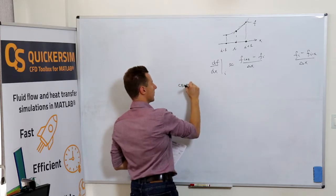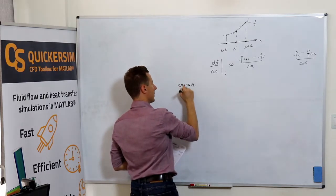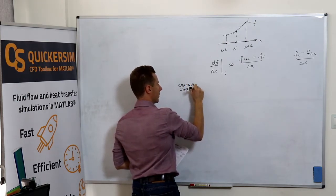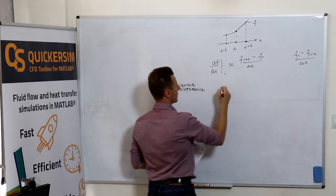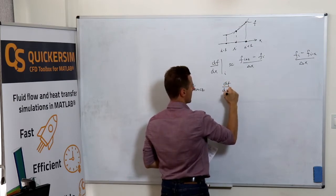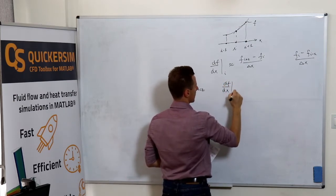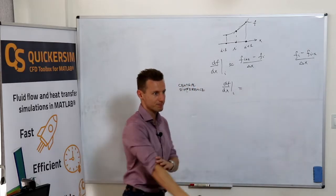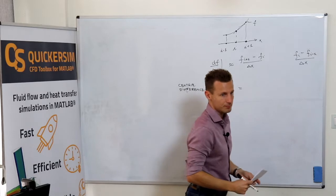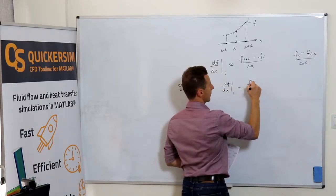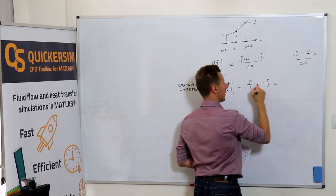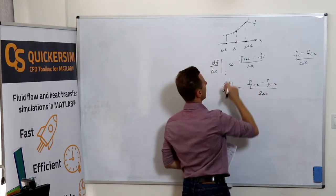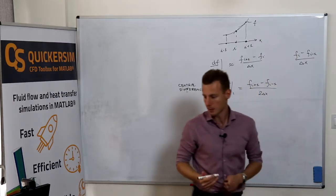The other option is to write the central difference, which would be f_{i+1} minus f_{i-1} divided by 2 delta X. What we are doing is basically taking the slope calculated out of these two points.